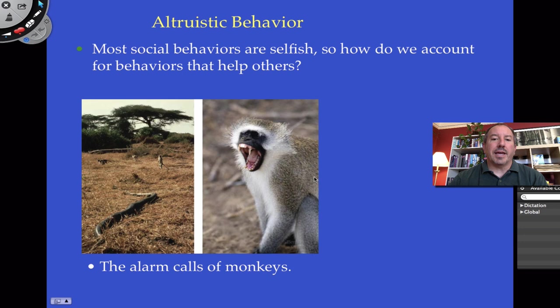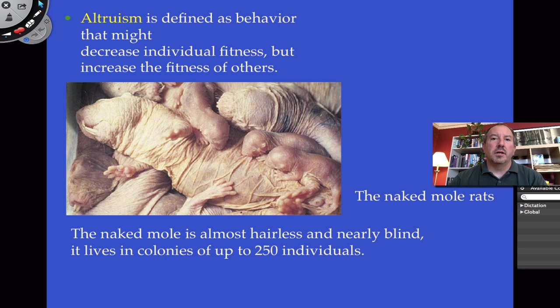This has come up in another context where animals are able to give alarm calls — monkeys are able to do this. When a giant snake is coming, a monkey is actually able to shout out that danger is coming, and in so doing it really puts itself out — it puts itself in harm's way so that others will benefit.